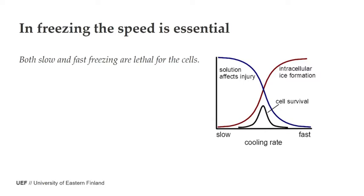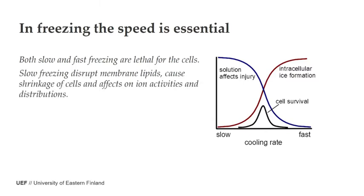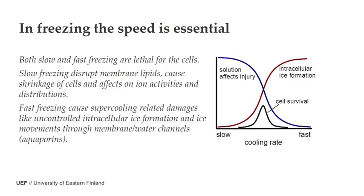Slow freezing happens in wild nature too, and the problems involve membrane lipids, cell volume, ion activities, and distribution. In fast freezing, supercooling-related damage occurs — ice forms inside cells and can even move through membranes via water channels, breaking their structure. So there are two different kinds of problems: either cell volume changes or damage from the ice itself.